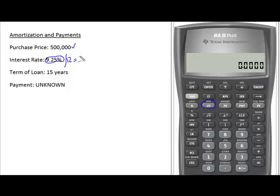What I end up with is 0.7708. So that's what I'm going to end up using here is 0.7708 as my interest rate. Now my term of loan is 15 years, except what I need to do now is I need to do the same thing.